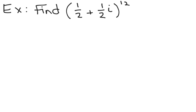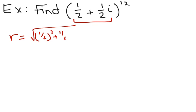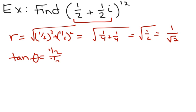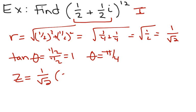Let's find the value of (1/2 + 1/2·i)^12. First, we convert the complex number to polar form. We find r = √((1/2)² + (1/2)²) = √(1/4 + 1/4) = √(2/4) = 1/√2. Then tan(θ) = (1/2)/(1/2) = 1, so θ = π/4, which is in quadrant 1. So the polar form is (1/√2)[cos(π/4) + i·sin(π/4)].